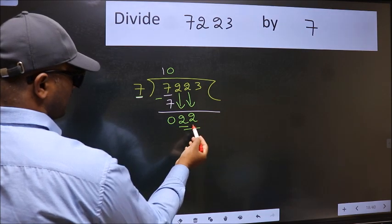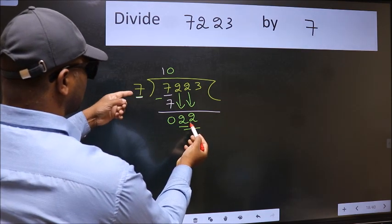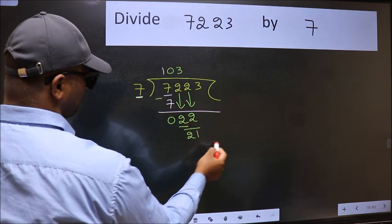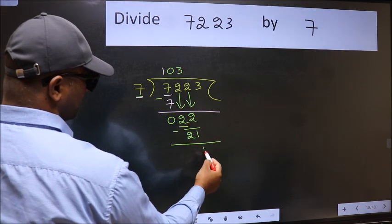Now 22. A number close to 22 in 7 table is 7 threes 21. Now we subtract. We get 1.